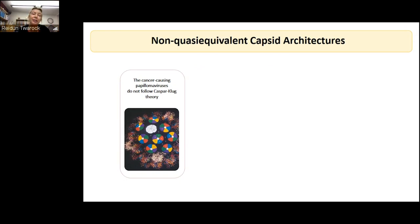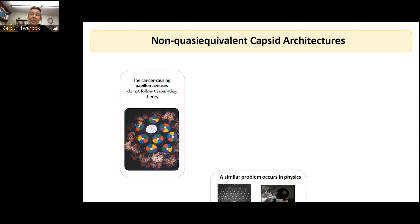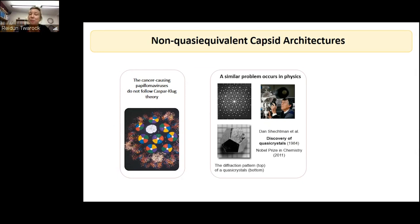I would like to segue into non-quasiequivalent capsid architectures. This is the polyomavirus, a cancer-causing virus that has 72 clusters of five proteins. This problem is familiar from physics in the description of quasicrystals — alloys that have long-range order but no periodicity, exhibiting non-crystallographic symmetries. We have a five-fold symmetry that clearly can't tile the plane, but there are mathematical structures with long-range order and no periodicity — Penrose tilings — that have this local symmetry, making out little five-fold axes. This is very much akin to the problem we face: we can't just use a surface lattice, we need a different construction.